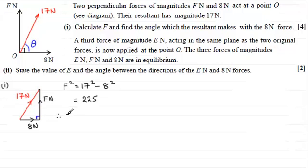If I do that, 17 squared minus 8 squared comes to 225. So F must equal the square root of 225, and it won't be plus or minus, we're just looking for the positive value which is 15.